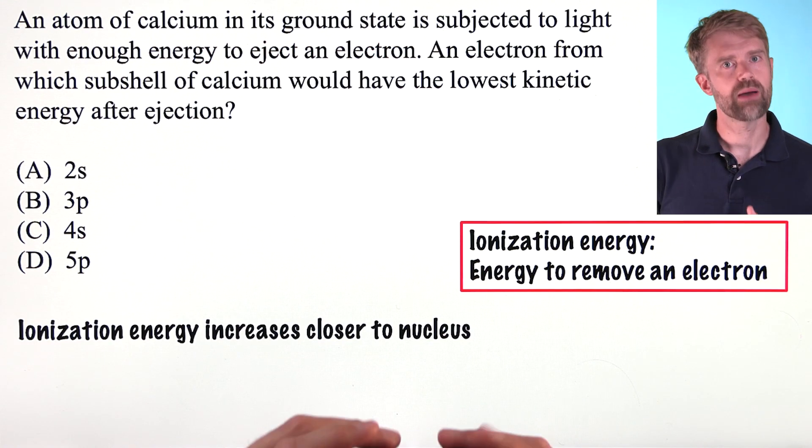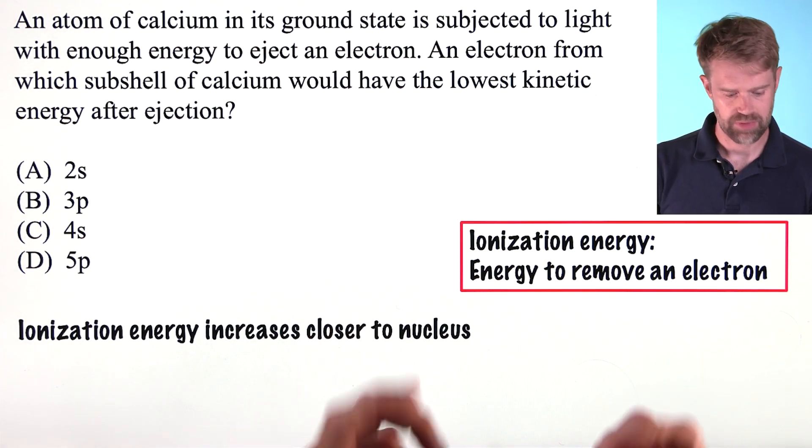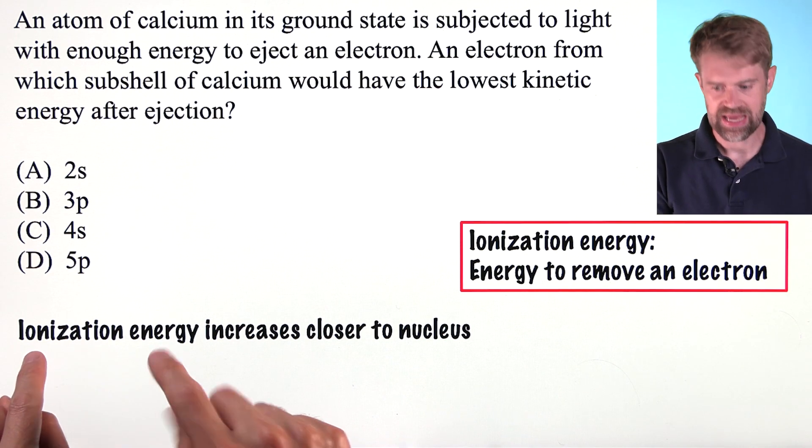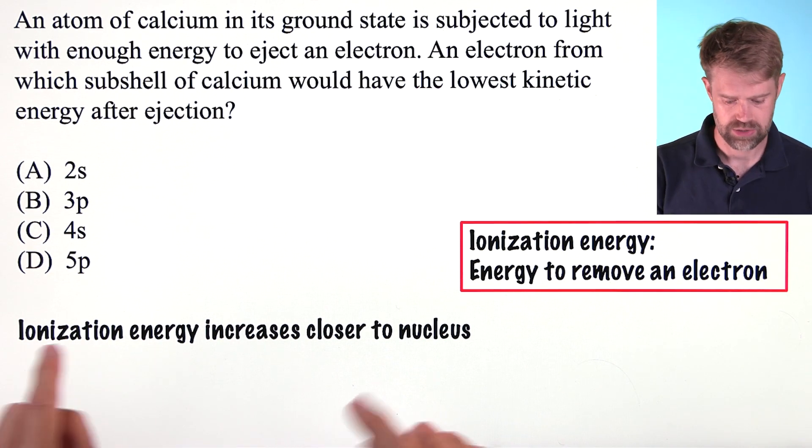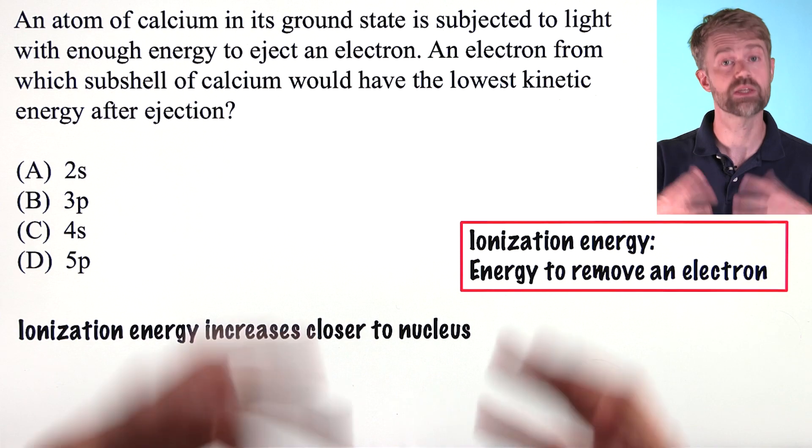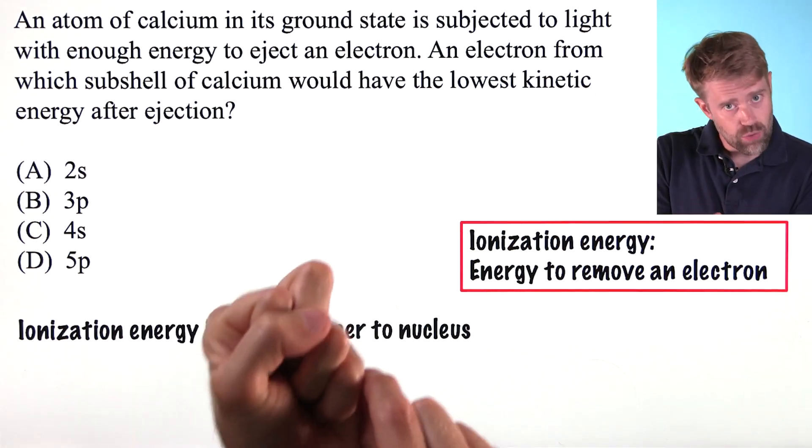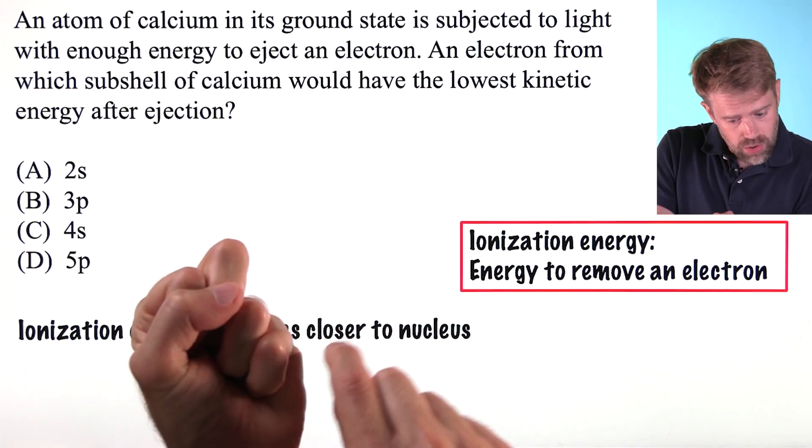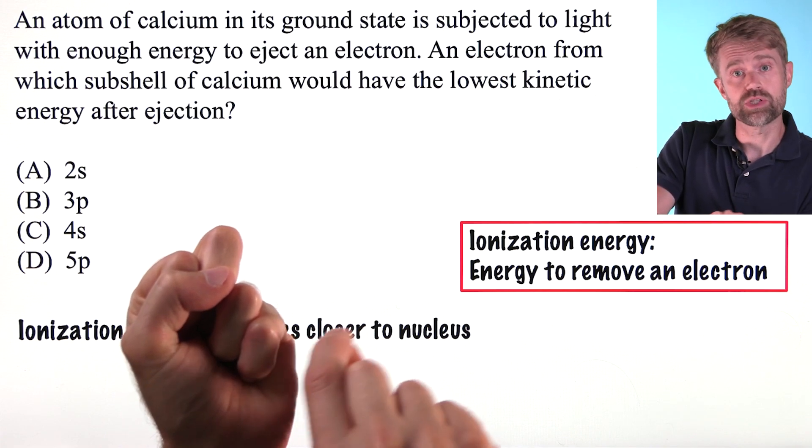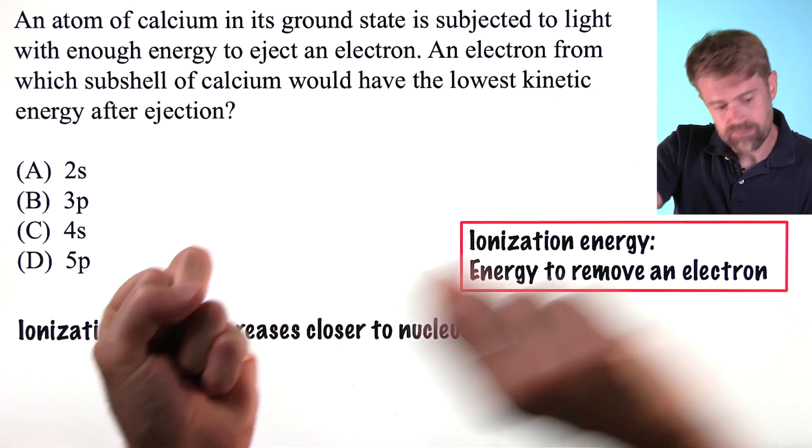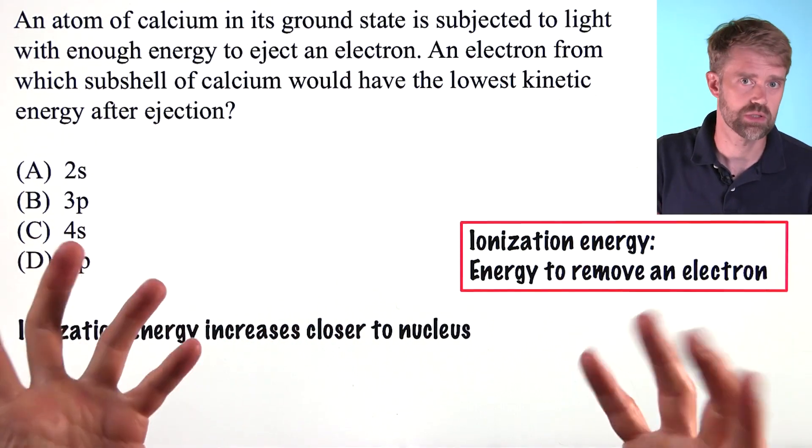The important thing to remember about ionization energy is that ionization energy increases as you get closer to the nucleus, and this makes sense. The more powerful the positive pull of the nucleus, the more energy you need to remove electrons that are close to the nucleus.